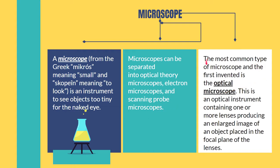The most common type of microscope and the first one invented is called the optical microscope — this is the one mostly used in schools. It uses one or more lenses to produce an enlarged image of the object.